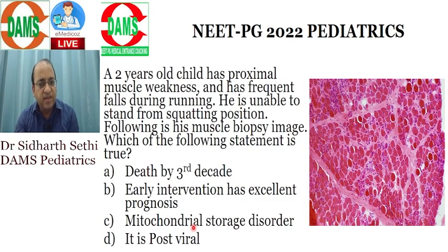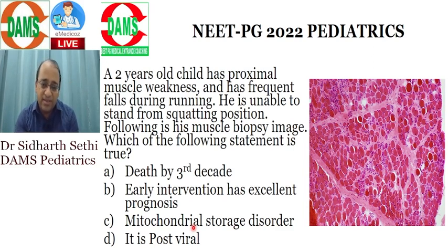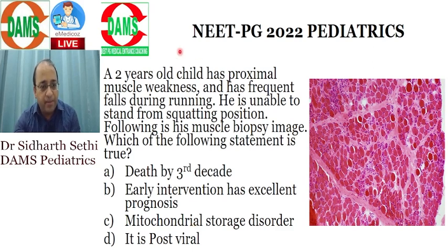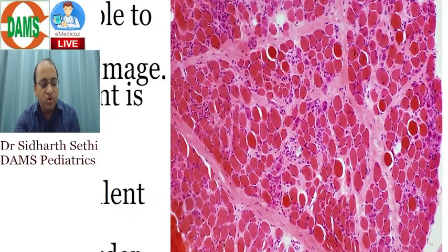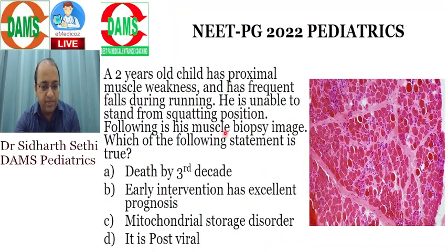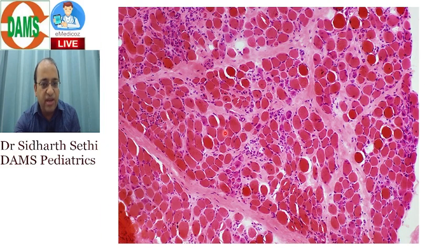There was a tricky integrated question: a two-year-old boy with proximal muscle weakness, unable to stand from squatting position, with Gower's sign, and a muscle biopsy image was shown. Many students told me that there were neutrophils within the muscle fibers — but these are not neutrophils; this is actually increased endomysial connective tissue.